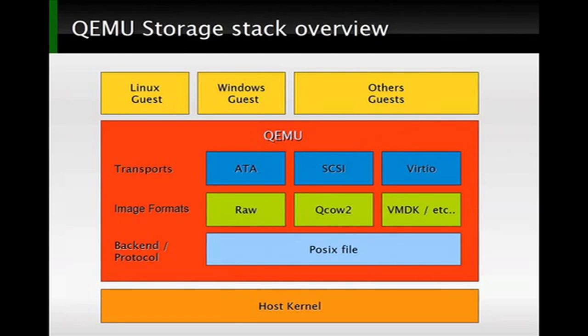To make this a little more clear, let's look at a picture of how this whole architecture looks. On the very bottom, we've got our host kernel that includes the file systems and storage drivers. And on the very top, we have a couple of guests — we might have Linux guests, Windows guests, or any other operating system. And in between, we have QEMU. QEMU is a pretty big project, and we're only looking at the storage-related components here.